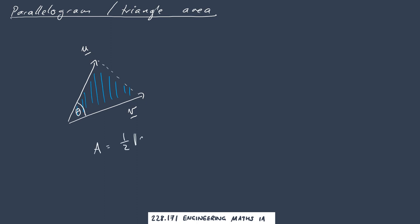Half the length of u... Just remember on a triangle, when you've got sides a, b, and an angle theta, then you've got area equals half ab sine theta.